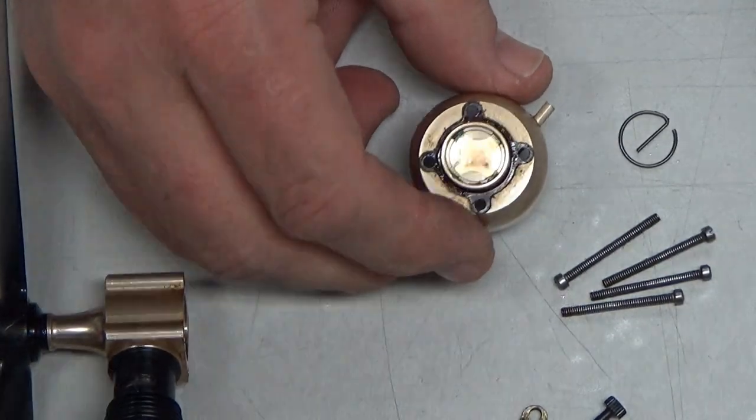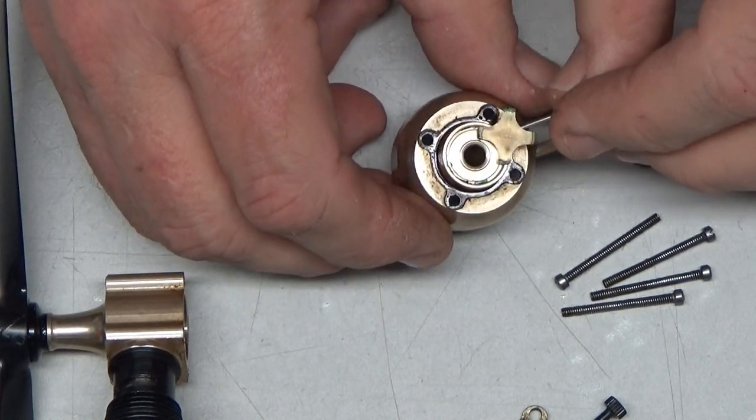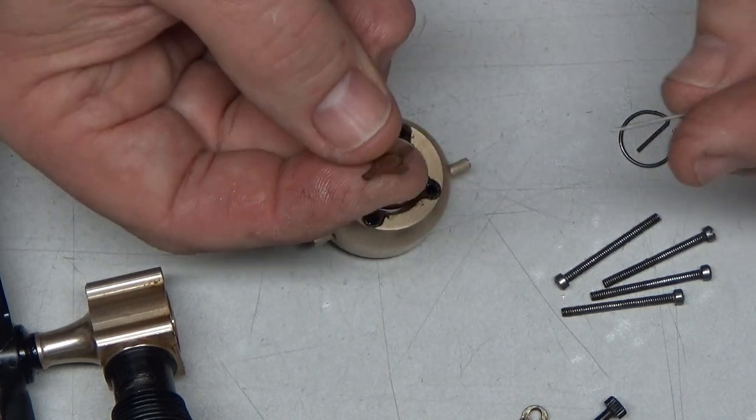That looks like it's a little copper reed valve. And if I get a T-pin here, maybe I can kind of gently lift it up. Okay, so that looks like it's in decent shape.